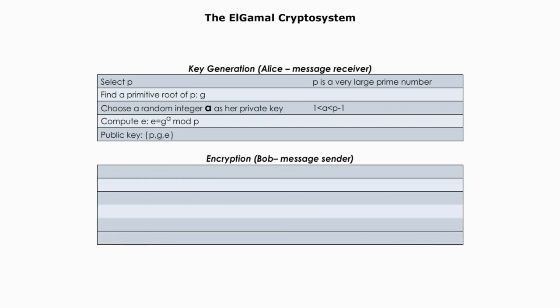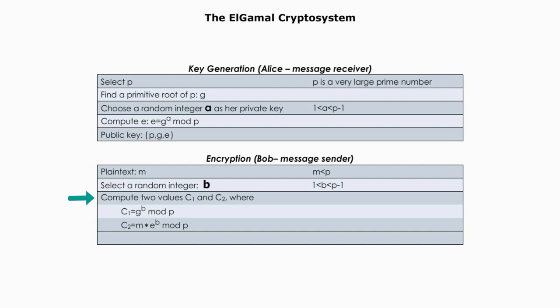Step 2: Encryption by Bob. Suppose Bob wants to send plaintext m, where m must be smaller than p in value. Bob selects a random integer b, where b is greater than 1 but less than p minus 1. He then computes two values: c1 equals g to the power of b, modulo p; and c2 equals m times e to the power of b, modulo p. The ciphertext for plaintext m is the pair (c1, c2).